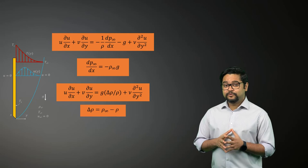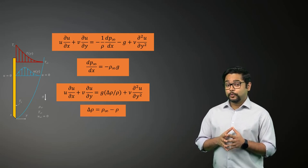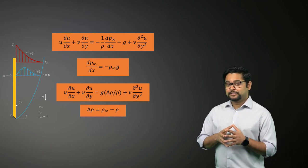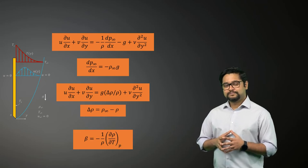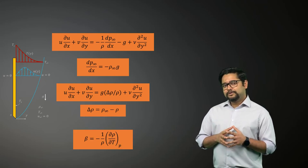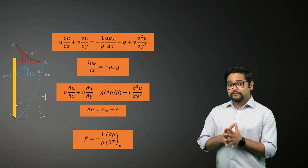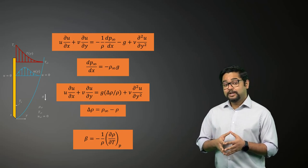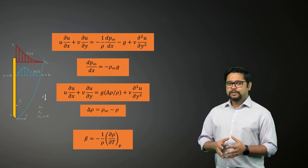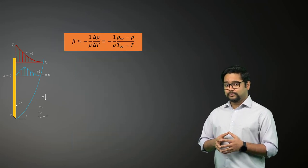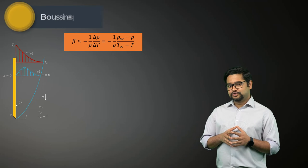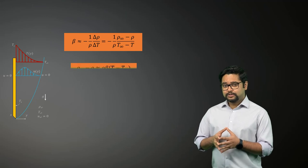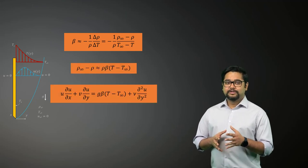This term represents the buoyancy force, and if the density variations are only due to temperature variations, then this term can be related to the volumetric thermal expansion coefficient using this expression. The volumetric thermal expansion coefficient is a measure of the amount by which the density changes in response to a change in its temperature at constant pressure. It can be approximated using the following equation. This simplification is known as the Boussinesq approximation, and substituting this in the momentum equation, we obtain the following equations for the x-momentum.